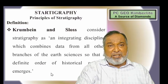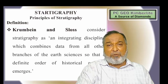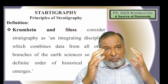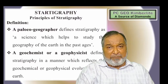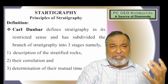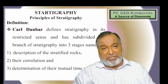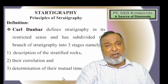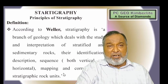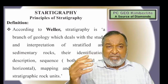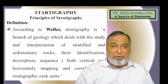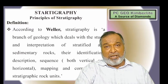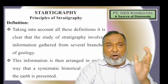Cuminance considers stratigraphy as an integrated discipline which combines data from all other branches of earth sciences so that a defined order of historical geology emerges. Carl Dunbar defines stratigraphy in a restricted sense, dividing its branches into three stages: descriptive study of stratigraphic rocks, their correlation, and determination of their mutual time relations. According to Weller, stratigraphy is a branch of geology which deals with the study and interpretation of stratified and sedimentary rocks — their distribution, description, sequence, both vertical and horizontal mapping, and correlation of stratigraphic rock units.